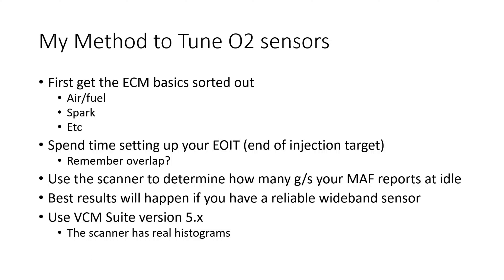You need to know how many grams per second your car is idling at — have some scanner logs from your idle tuning work. You don't necessarily have to have a wideband sensor, but it will help you tremendously. If you've got one, use it. The next thing is VCM Suite 5 — HP Tuners has finally given us real, honest-to-goodness actual histograms. Normally what we call histograms in HP Tuners are just charts or graphs, not actual histograms. I'll show you how to set that up in the scanner.